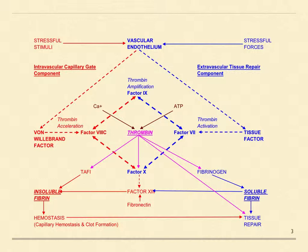However, it is easier to comprehend as two semi-independent subcomponents. The extravascular tissue repair component, shown in blue, corresponds to the extrinsic pathway of the coagulation cascade. The intravascular capillary gait component, shown in red, corresponds to the intrinsic pathway of the coagulation cascade.